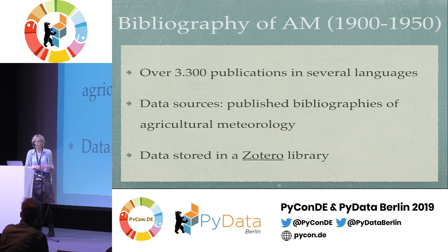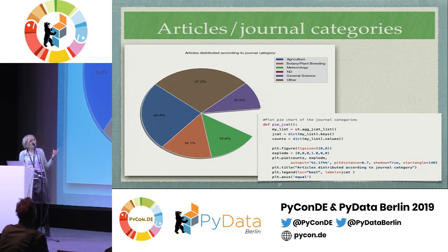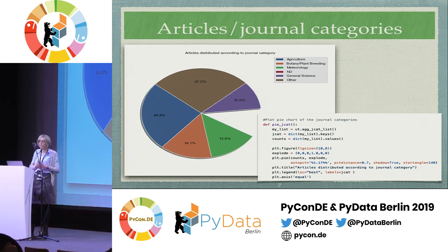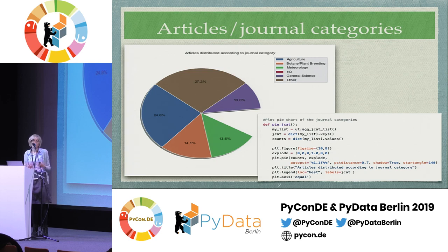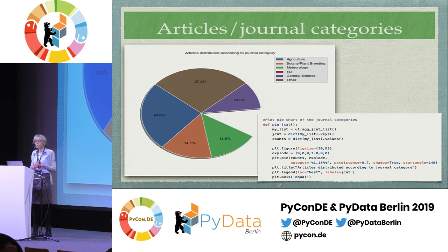I cannot tell you in detail all the results, but I would just like to point out a few things. For instance, the journal articles, which are the biggest chunk of my dataset, proved very interesting, because when I paired them with the journal categories — which I did by hand — what turned out is that the large majority of these publications were printed in agricultural journals.